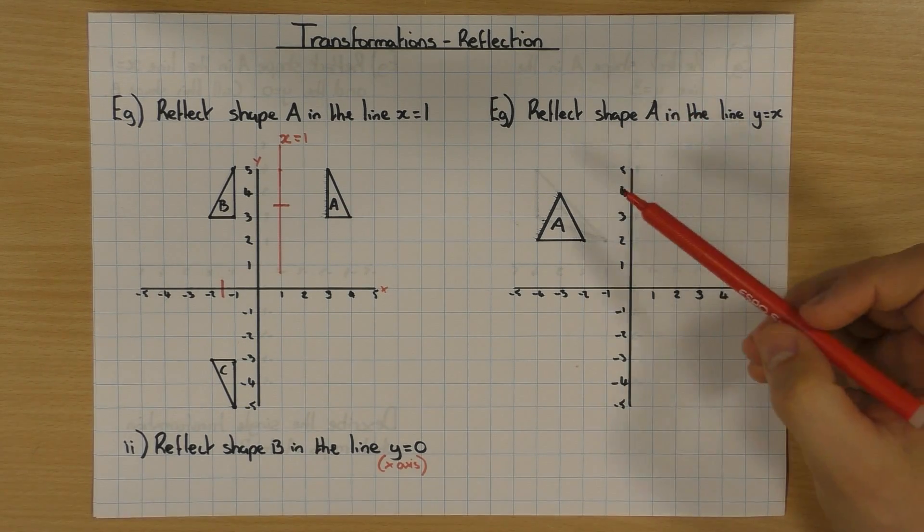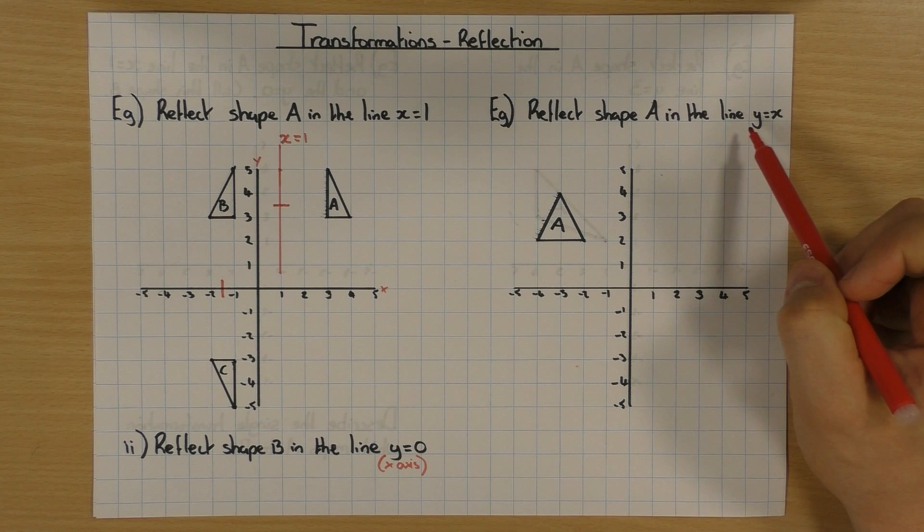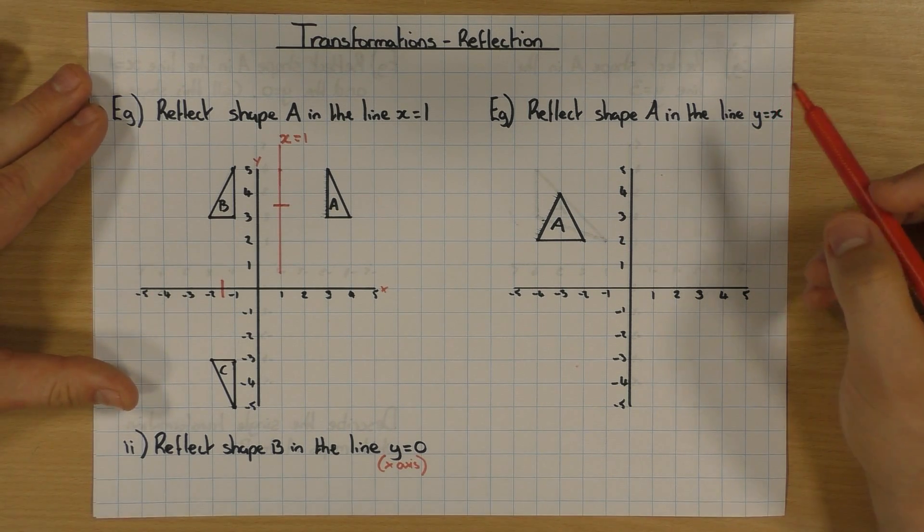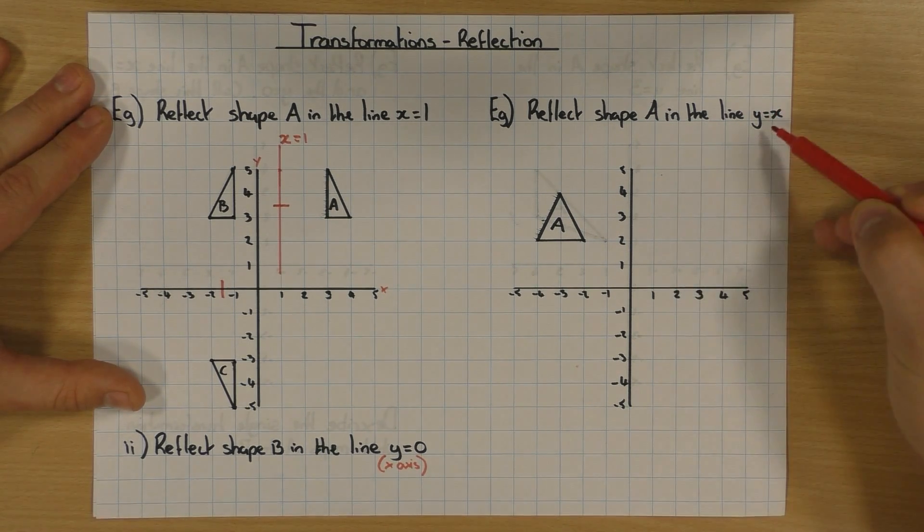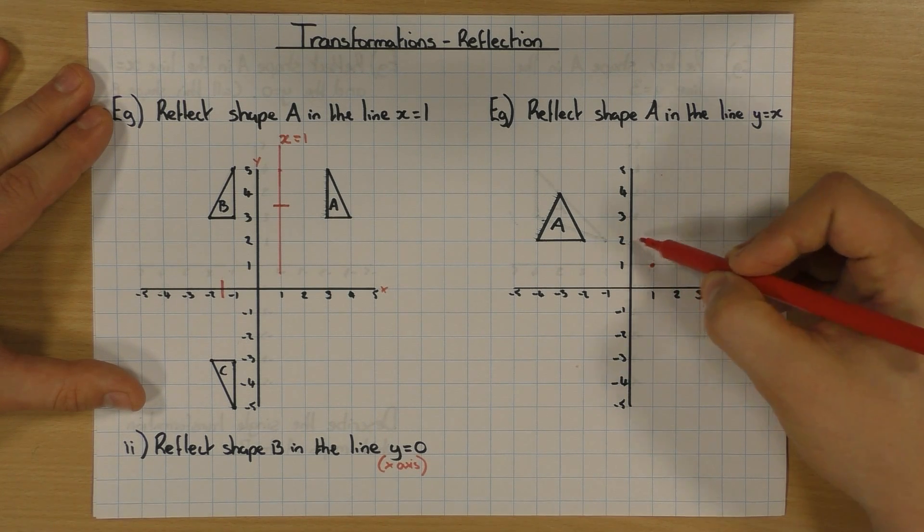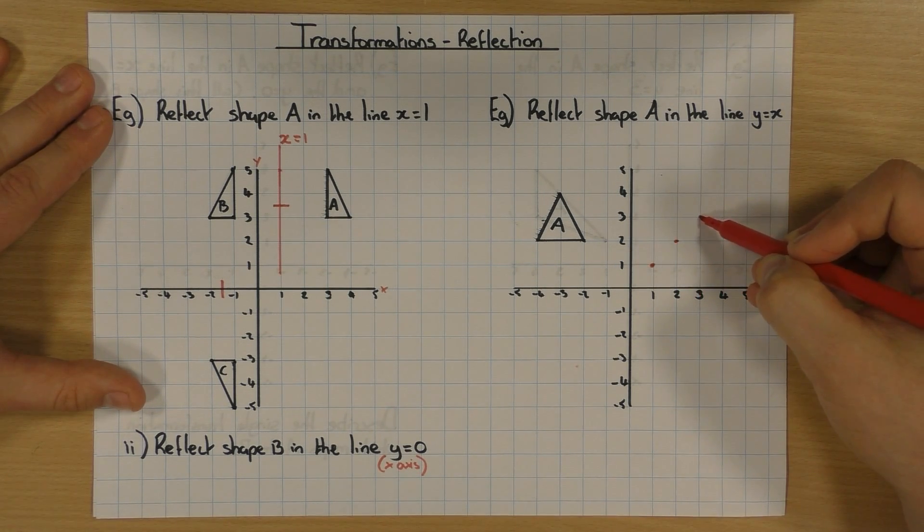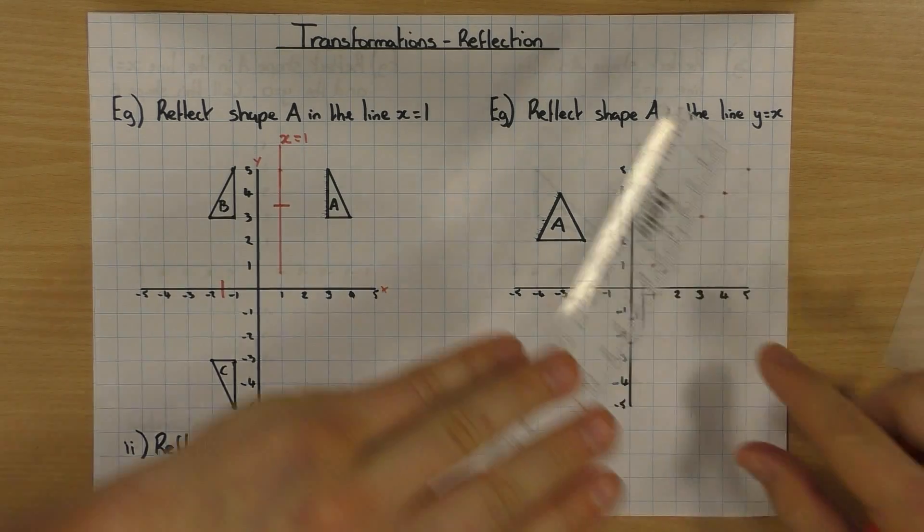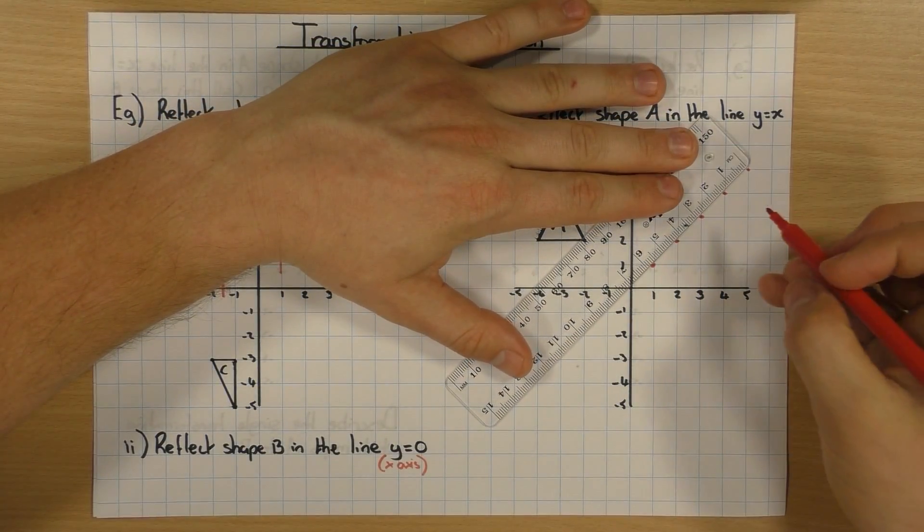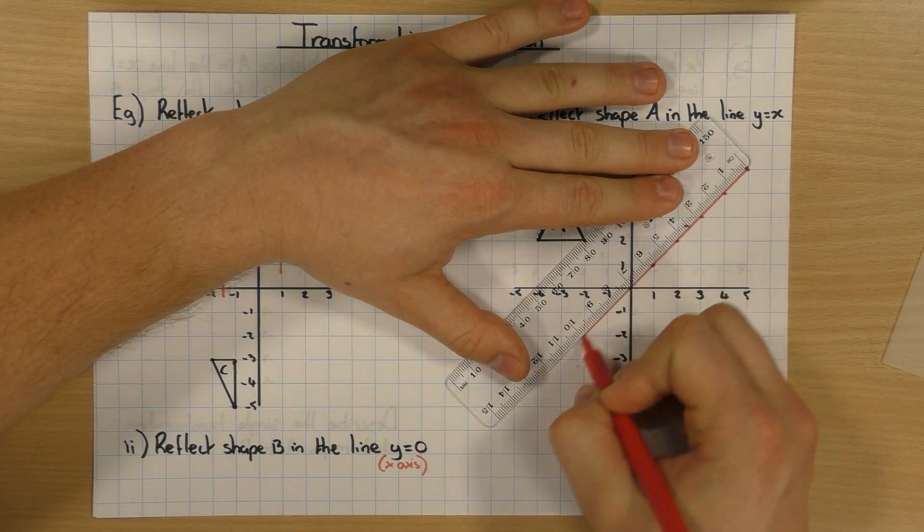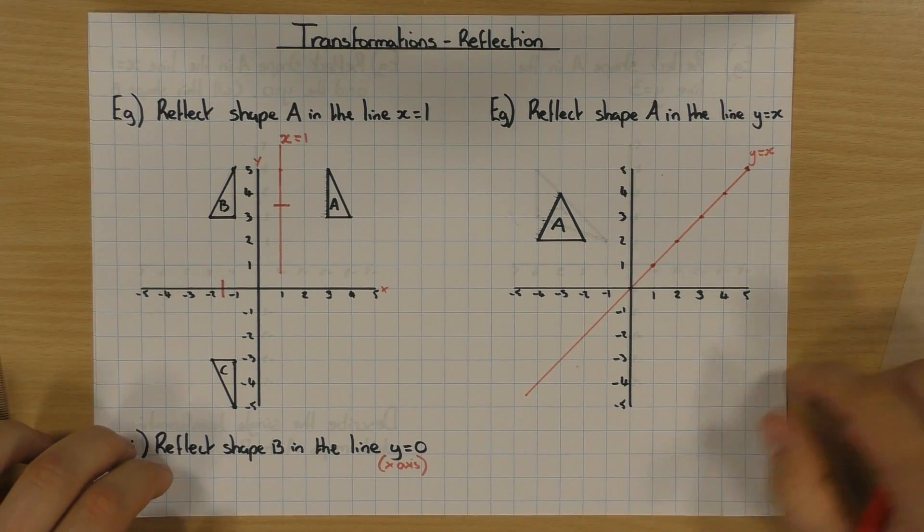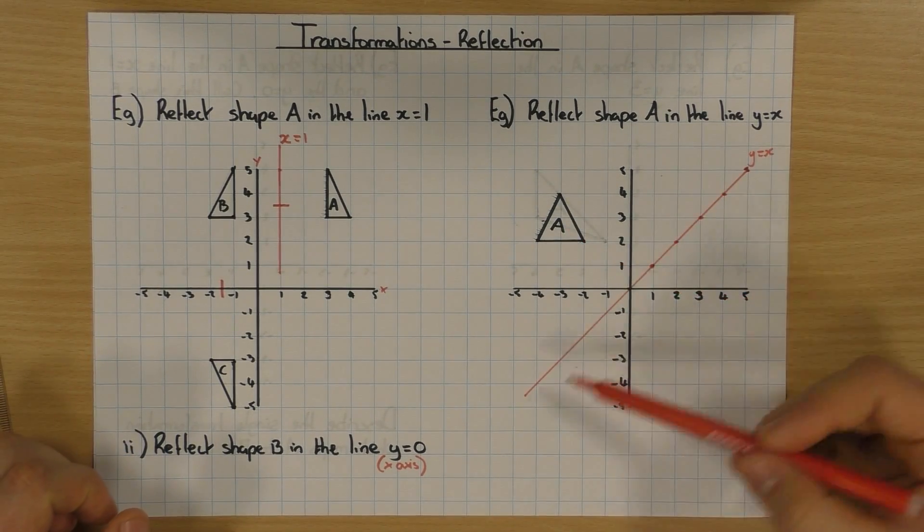The next one I'm going to do is this one here, where it says reflect this shape A in the line Y equals X. Now people always get confused with Y equals X. Not to worry, it's nice and easy. If X equals 1, Y equals 1, because Y equals X. They're both equal to each other. So when X equals 2, Y equals 2. And when X equals 3, Y equals 3, and so on. 4, 4, 5, 5, 0, 0, and so on and so forth. So once you've plotted a few of those points, you can obviously then get your ruler and draw that line on. So this is just a line of Y equals X. You might have known that from doing some graph work or something like that. But if you didn't, there you go.